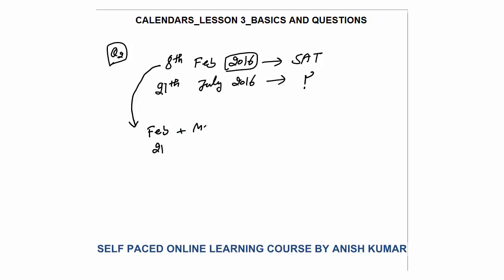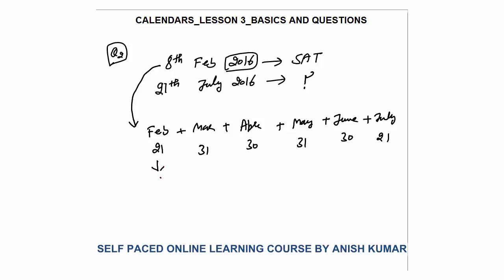March has 31 days, April has 30 days, May has 31 days, June has 30 days, and finally July I have only 21 days. Now I will calculate the odd days: 21÷7 → remainder 0, so 0 odd days. 31÷7 → remainder 3. 30÷7 → remainder 2. 31÷7 → remainder 3. 30÷7 → remainder 2. 21÷7 → remainder 0. And this is also 0 odd days.